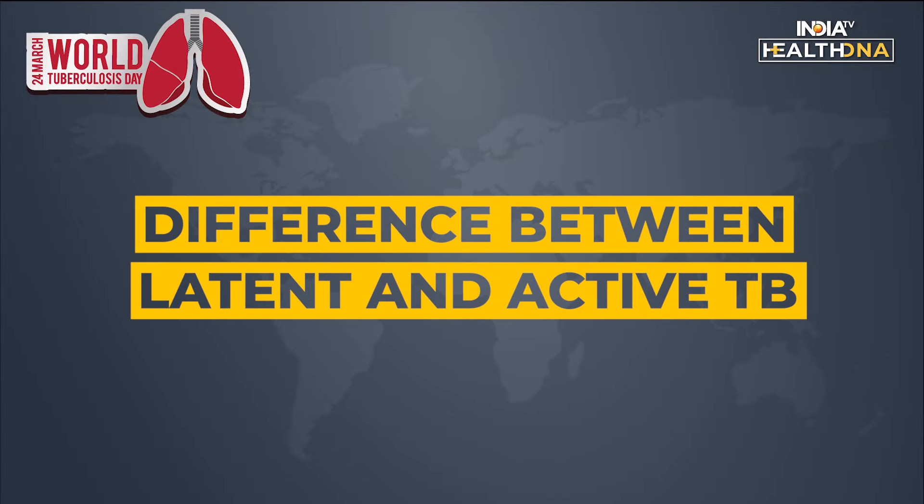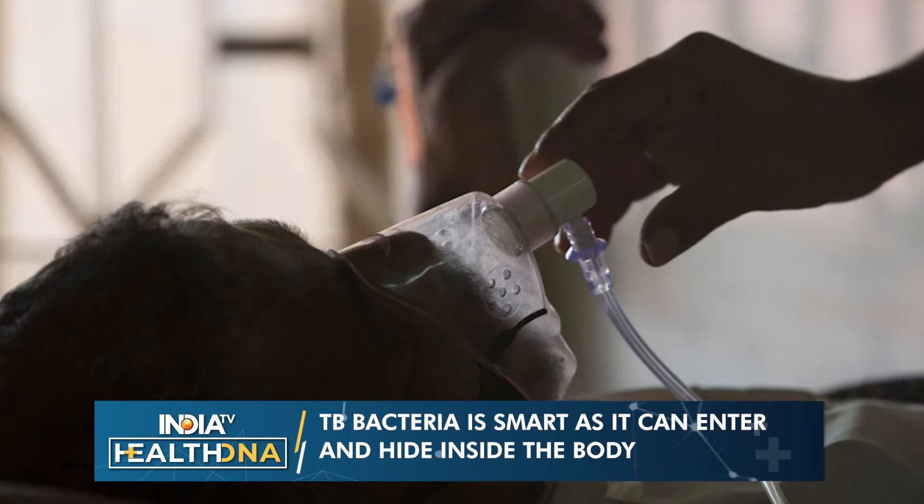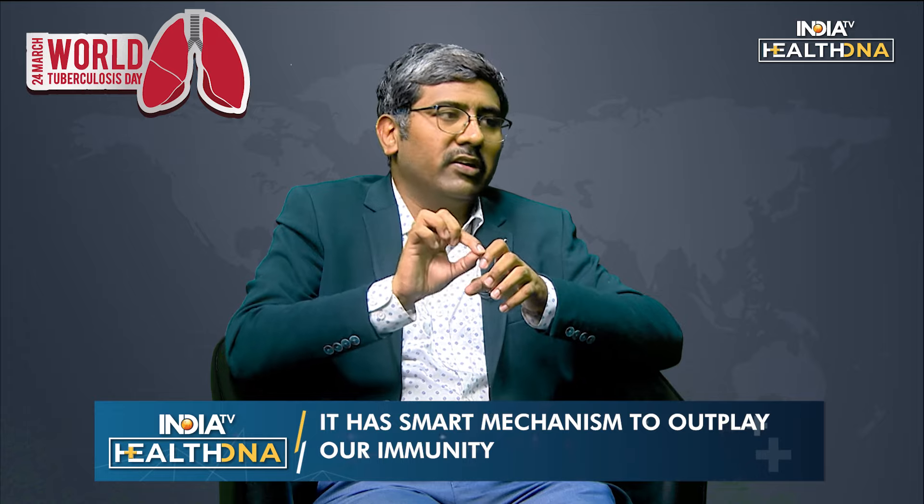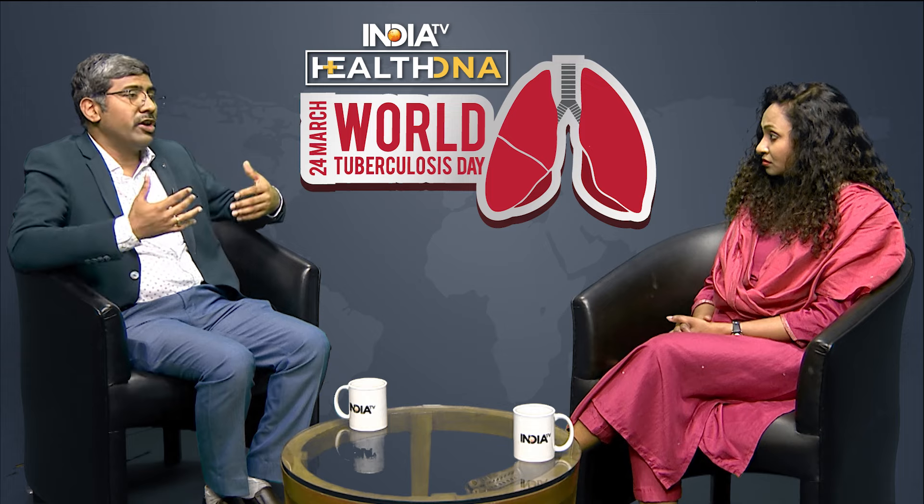Tuberculosis is the smartest bacteria because it can enter the body, hide itself, and outplay our immunity. It hides in the body cells, and when immunity goes down it may reemerge. When it is hidden with no symptoms, we call it latent tuberculosis. Surprisingly, many Indian people have latent tuberculosis. When these people start on steroids, develop diabetes, or their immune system goes down, they may turn into active tuberculosis.